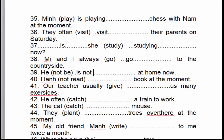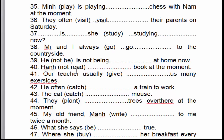Câu số 40: 'Hanh is not reading a book at the moment.' Hạnh không đọc sách vào lúc này. Sự kiện đó đang diễn ra — thì hiện tại tiếp diễn, thể phủ định. Cho nên chúng ta sử dụng ở thì hiện tại tiếp diễn, thể phủ định → 'is not reading'.